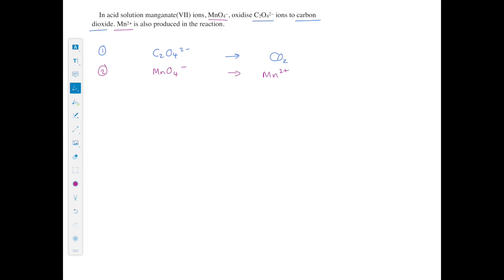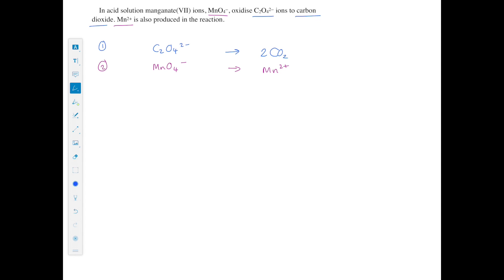Looking at equation 1: there are two carbons on the left-hand side but only one on the right, so I add a coefficient of 2 in front of CO₂. Checking oxygens: four on the left, now four on the right — sorted. Now sorting charges: we have a 2 minus charge on the left but a zero charge on the right. To make it 2 minus, we add two electrons to the right-hand side. This is oxidation, because the original species has lost electrons.